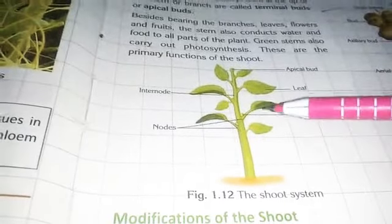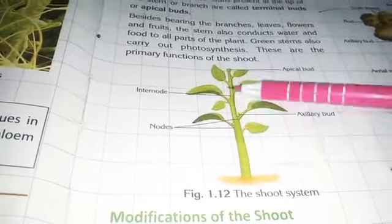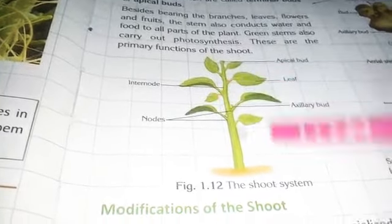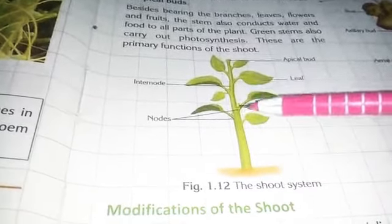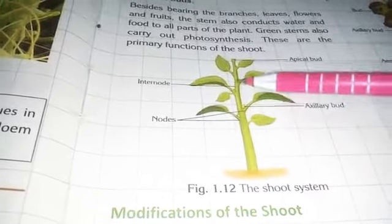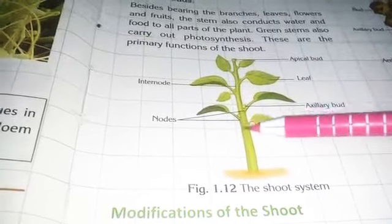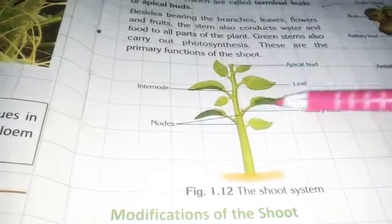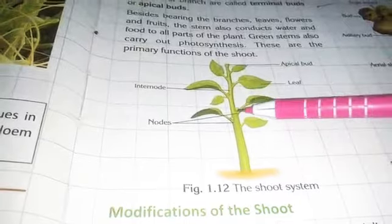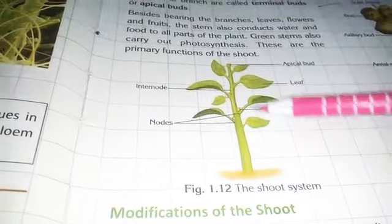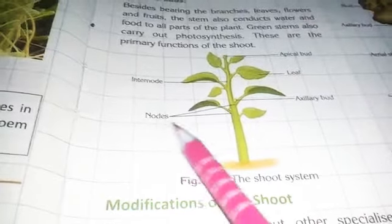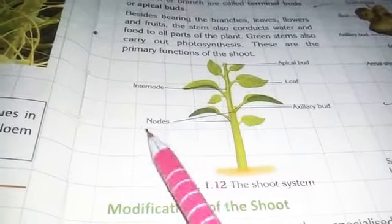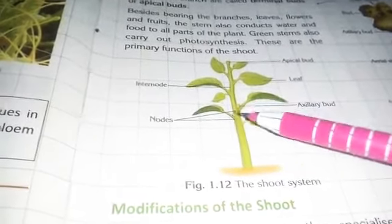In the shoot system, stem is the main part, because all the branches, leaves, flowers, and fruits are attached to it. On the stem there are certain points from where branches come out — those points are called nodes.